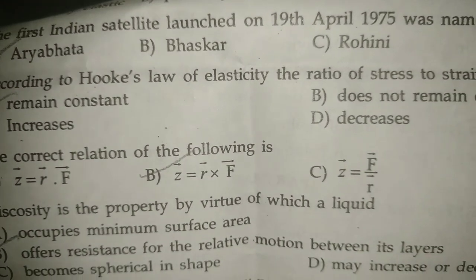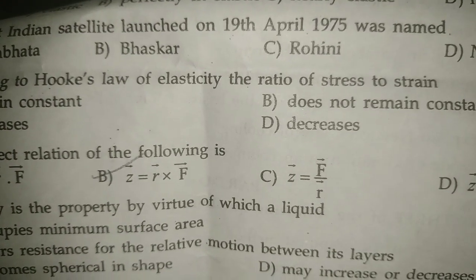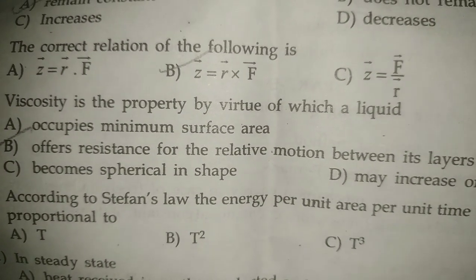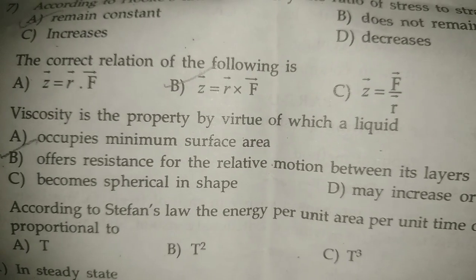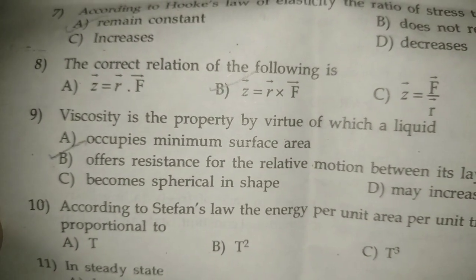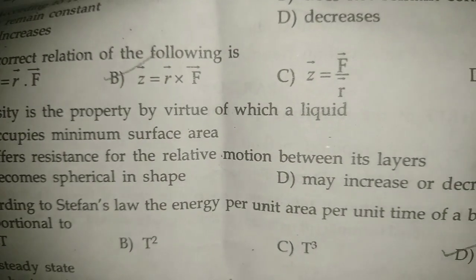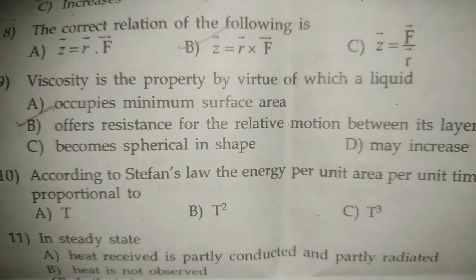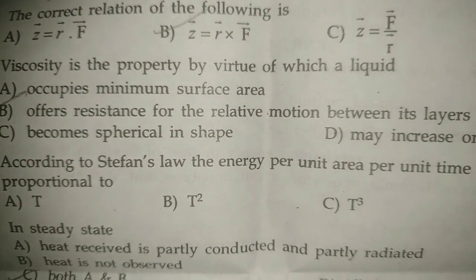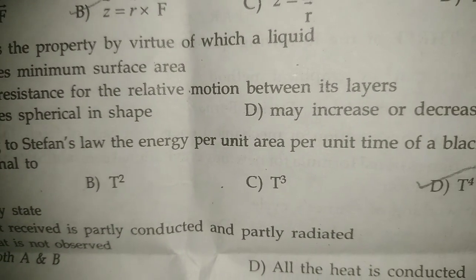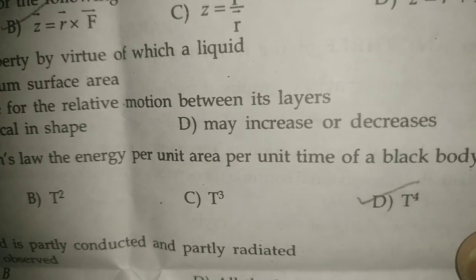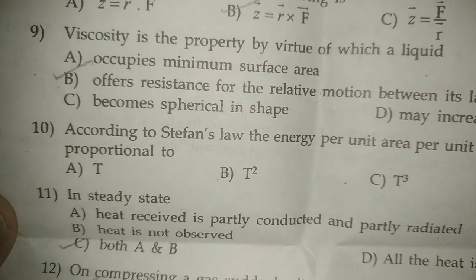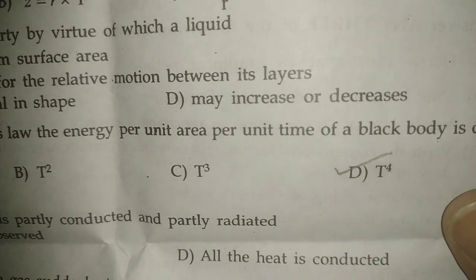Question eight: the correct relation is torque vector τ = r vector cross F vector. Question nine: viscosity is the property by virtue of which a liquid offers resistance to the relative motion between its layers — answer B. Question ten: according to Stefan's law, the energy radiated per unit area per unit time by a black body is directly proportional to T raised to the power four.